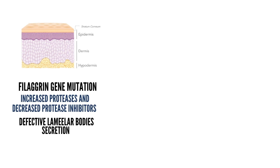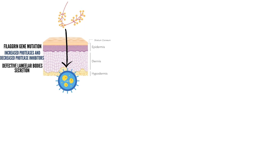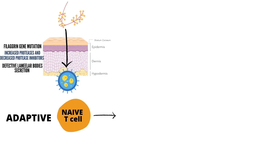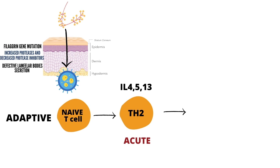The next important factor is immune dysregulation. Because of the defective epidermal barrier, all kinds of antigens enter the skin. These antigens are presented by dendritic cells to naive T cells, which differentiate into a TH2 response — the main immune response in the acute flare of atopic dermatitis. This TH2 response is abnormal and does not occur in the normal population. IL-4 and IL-13 further downregulate filagrin expression in keratinocytes, inducing further epidermal barrier dysfunction.